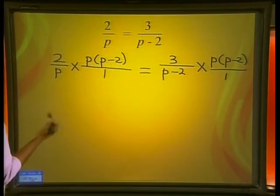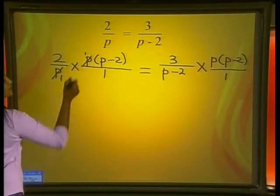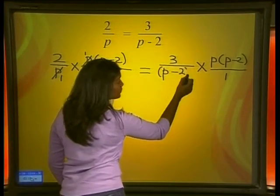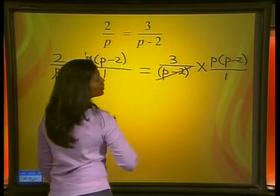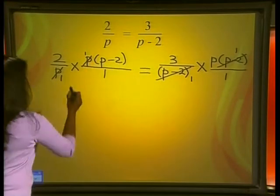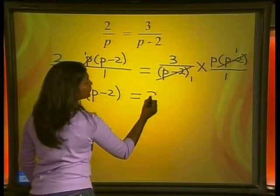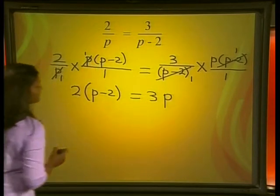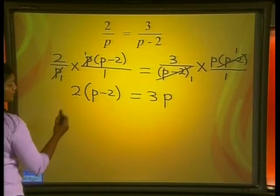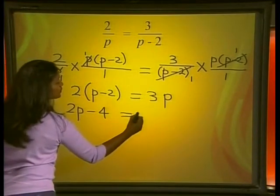Now let's cancel our terms. P divides into P once. P minus 2 is one term so we put brackets around it — P minus 2 goes into P minus 2 once on each side. We are left with 2 multiplied by P minus 2 which is equal to 3 multiplied by P. Expanding the brackets: 2 times P is 2P, and 2 times minus 2 is minus 4, giving us 2P minus 4 equals 3P.